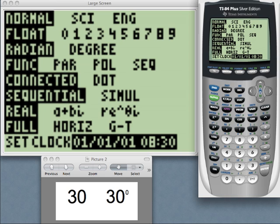Here's the mode screen and you'll see that the third choice down is radian and the other choice that's not highlighted right now is degree. So my calculator is in radian mode.